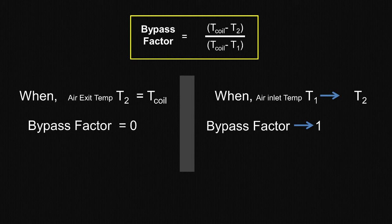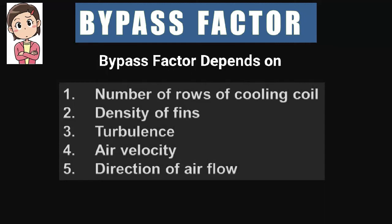The bypass factor depends on the following factors. First, the number of rows of the cooling coil — as the number of rows increases, the bypass factor decreases. Next, the density or pitch of the fins — as the density of fins increases, the bypass factor decreases. Bypass factor also depends on turbulence — as turbulence increases, the bypass factor decreases. On the contrary, as the velocity of air passing over the coil increases, the time of contact of air to the coil decreases, which increases the bypass factor.